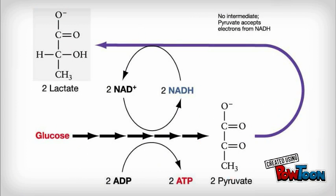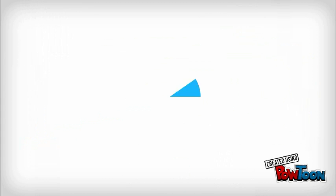This shows lactic acid fermentation which occurs in humans and other mammals. The product of this lactic acid is toxic to mammals. The goal is to reduce pyruvate which generates NAD+. This all takes place in the cytoplasm.